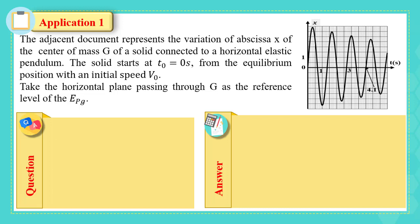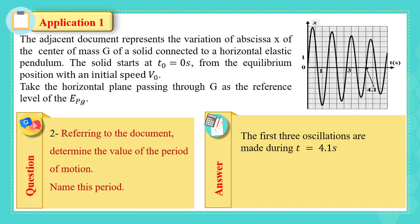Referring to the document, determine the value of the period of motion, and then name this period. Check this figure. The first three oscillations are made during 4.1 seconds. So, the period is this time over 3, which is 4.1 over 3 equals 1.367 seconds. The name of this period is pseudo-period.